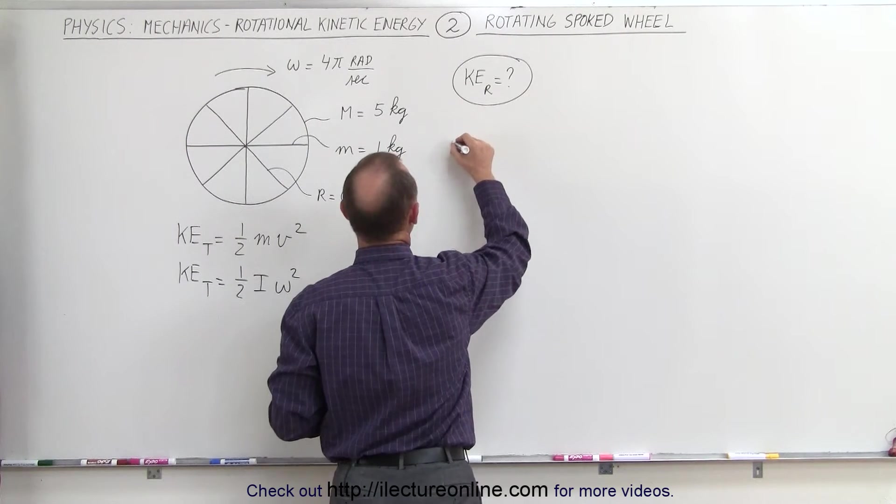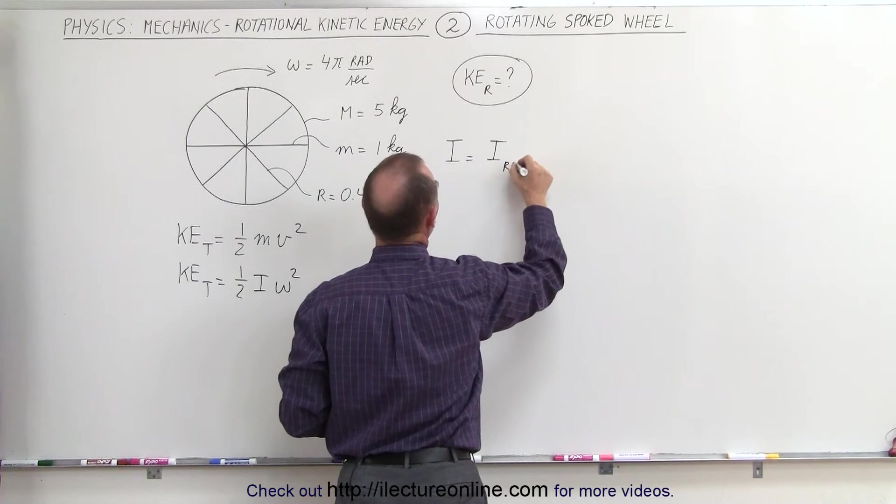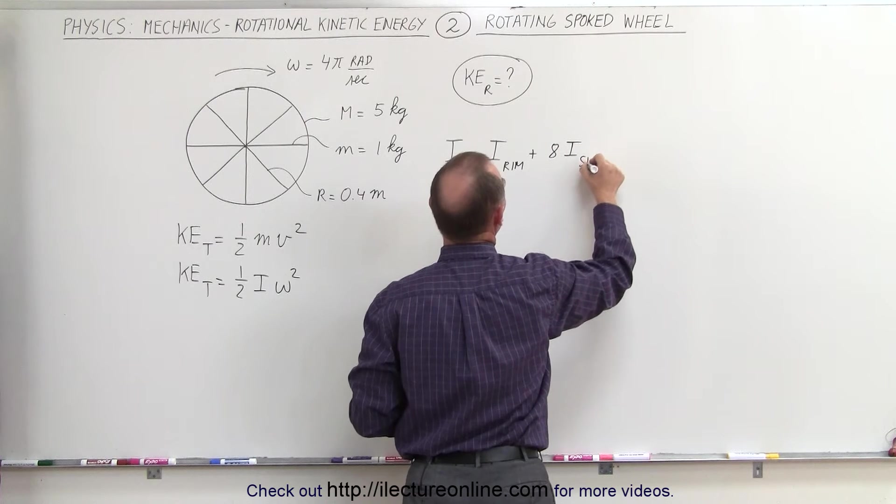Therefore, the moment of inertia, I total, is equal to the moment of inertia of the rim plus 8 times the moment of inertia of each spoke.